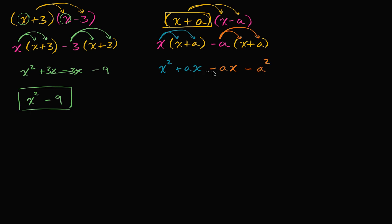Notice that regardless of my choice of a, I have ax and then minus ax, so this always cancels out. It didn't just work for the case when a was three — for any a, if I have a times x and then subtract a times x, that's going to cancel out. So we are left with x squared minus a squared.